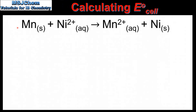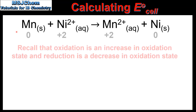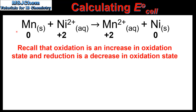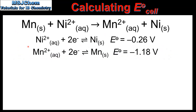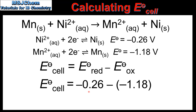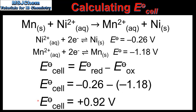Once again, we see the positive sign, which tells us that this is a spontaneous reaction. In our next example, we will calculate the cell potential for this reaction. If we look at the oxidation states, we can see that the manganese is being oxidized and the nickel ions are being reduced. We'll use the standard electropotential values to calculate the cell potential. The nickel ions are undergoing reduction and the manganese is undergoing oxidation, so the cell potential is negative 0.26 minus negative 1.18. This gives us a cell potential of positive 0.92 volts, which tells us the reaction is spontaneous.